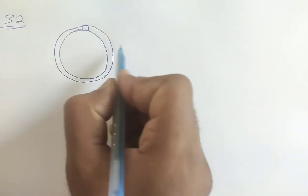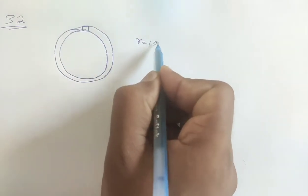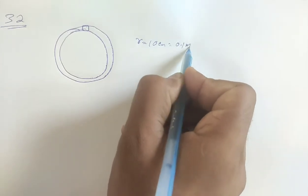What do we see here? This tube is given, which has radius 10 centimeter. If you convert to meters, it is 0.1 meter radius.